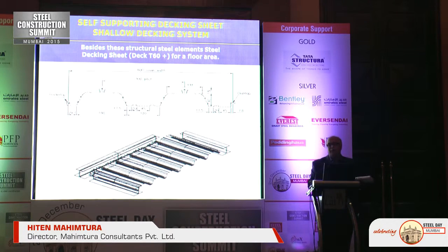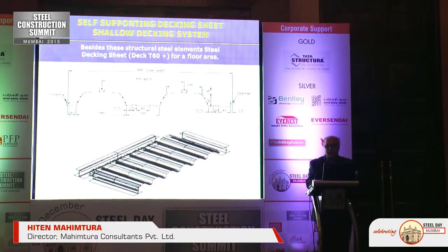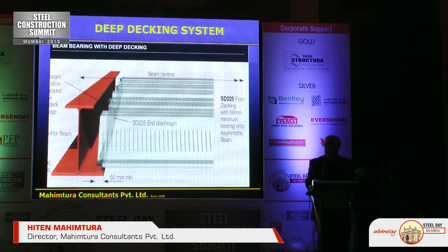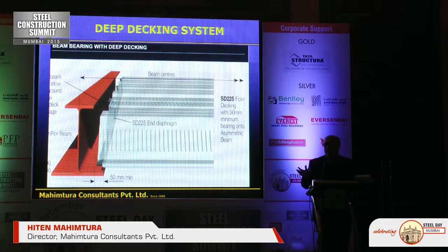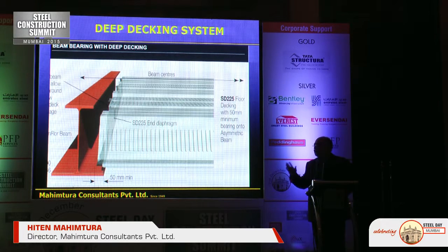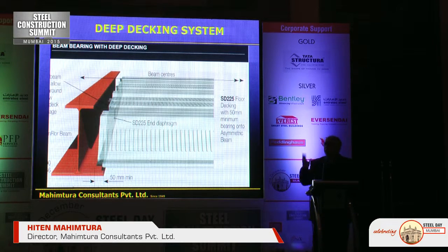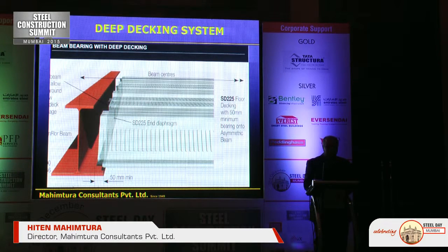Different types of decking sheets are available in the market — shallow decking and deep decking systems. The deep decking system is not commonly available in India but can be imported. We used it for the Intercontinental Hotel at Marine Drive in Bombay, where you can span about 4 to 4.5 meters without any secondary beams. It's like a flat slab in steel — you don't see any beams because asymmetrical beams (ASMB) are used, where the lower flange is larger than the top flange so the deck rests on the bottom flange. There are many material options depending on your building type.